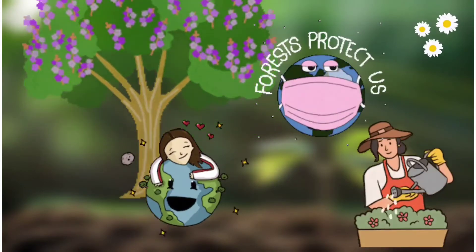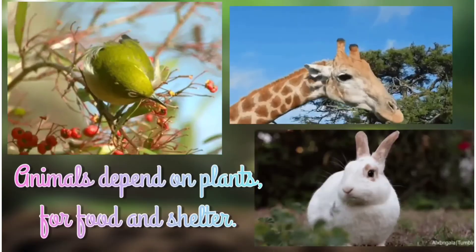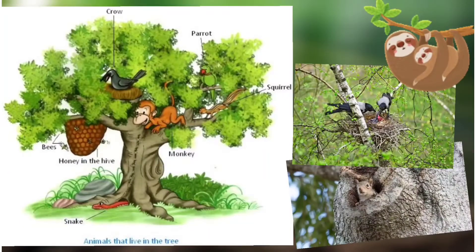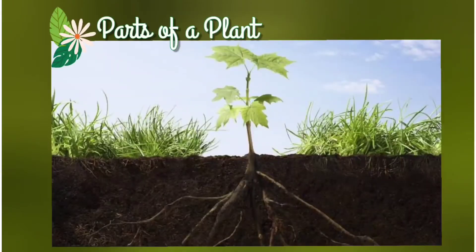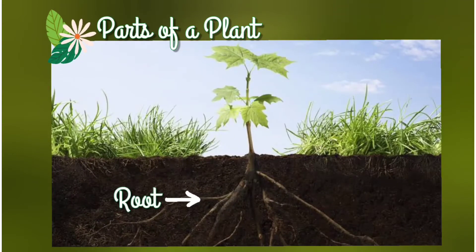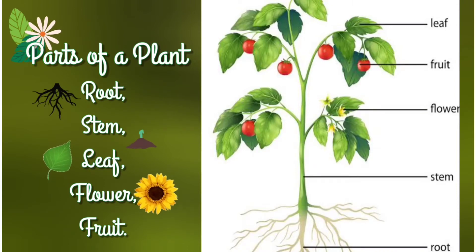Animals also depend on plants for their food and shelter. A typical plant contains two main parts: the roots and the stem. From the stem come the leaves, flowers, and fruits.